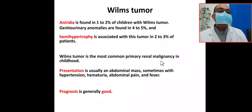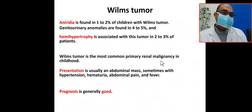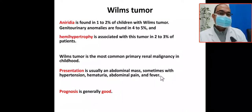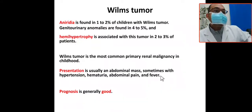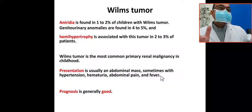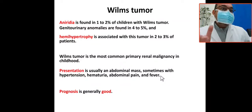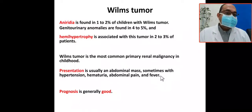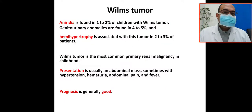Wilms' tumor is the most common primary renal malignancy in childhood. Presentation can be remembered as the 3 H's: hypertension, hematuria, and renal megalgia or renal mass. It usually presents as an abdominal mass, and sometimes with hypertension, hematuria, abdominal pain, and fever.